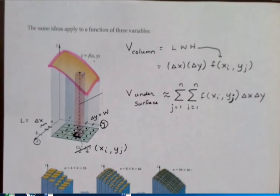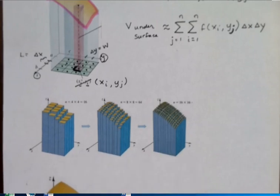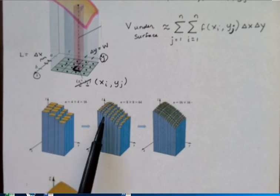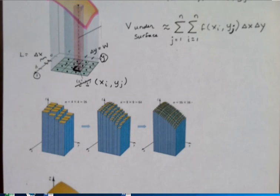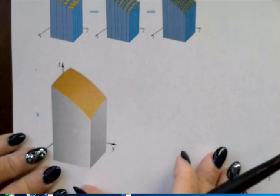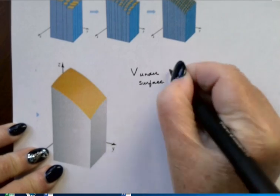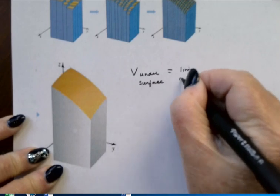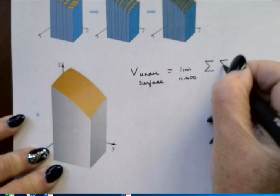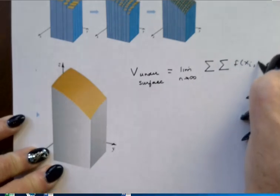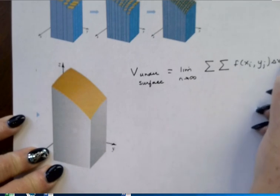Just like with our rectangles, the more columns we use, the better the approximation to the true volume. Notice it goes from being a very segmented, jerky shape to smoother to very smooth as I use lots and lots of columns. In order to get the exact volume under the surface, we would have to use infinitely many columns — once again letting n go to infinity. So to get the exact volume, I take the limit as n goes to infinity of the double sum of f of x sub i, y sub j, delta x, delta y.